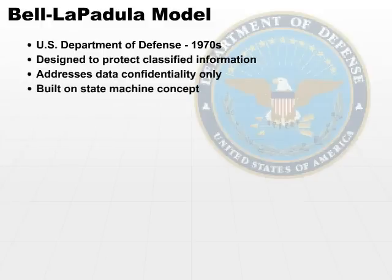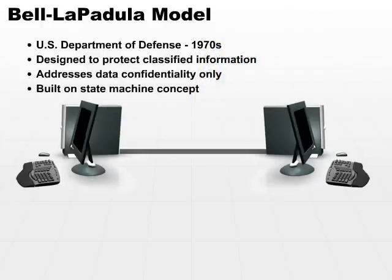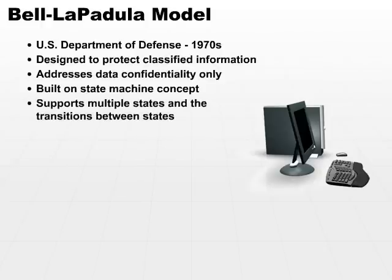Since it is built on the state machine concept, we know that we define specific states of our data. So we know we have confidential data, then we can map one state to another state — such as we have an unaccessed object, and then the next state may be an accessed object. Based on the transition rule, we know that we are in a secure state at both ends of the spectrum, so our system is always secure. This model supports multiple states and all the transitions between the states.